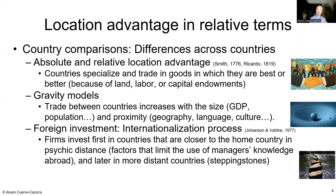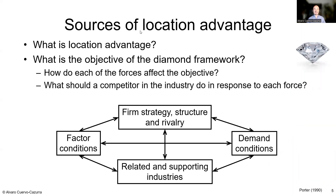This resolves the conundrum: the specialization story is about factor differences — it's an input story. The investment and internationalization story is about similarity — it's about what you sell and to whom. That's the solution. But where do these location advantages actually come from? Why do some countries have particular conditions that others don't? This leads us to the sources of location advantage — the diamond model.